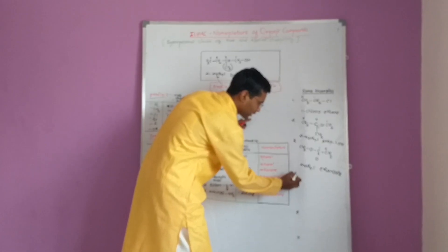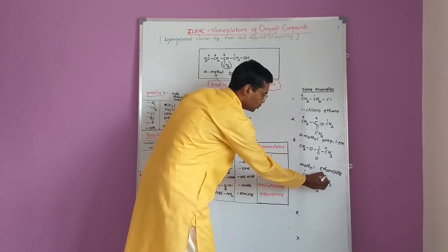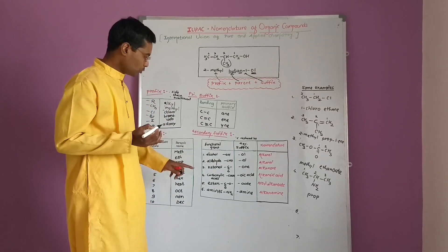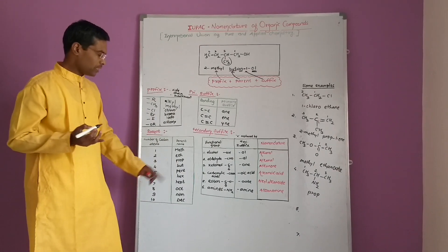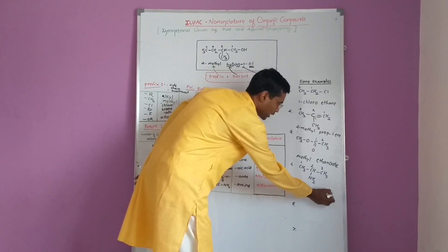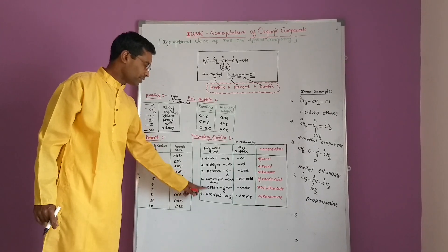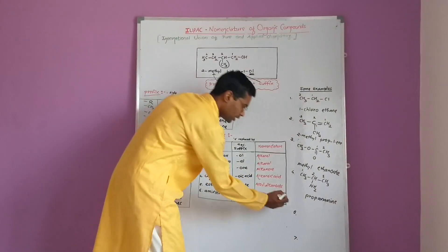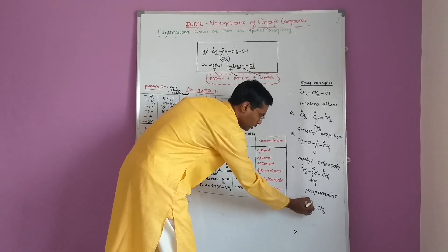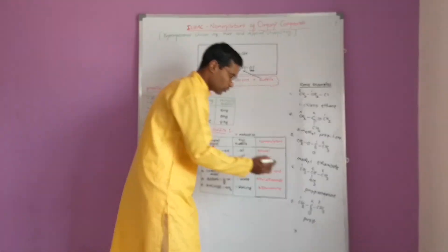Fourth example: CH3-CH(NH2)-CH3. Counting: 1, 2, 3 — three carbon atoms, so the parent is 'pro' giving propane. E is replaced by -amine, so the IUPAC name is propanamine. Fifth example — ketones: CH3-C(=O)-CH3. Numbering: 1, 2, 3 — three carbon atoms gives 'pro', and carbon-carbon single bonds give ANE. The E is replaced by -one, and the carbonyl is at position 2, giving propan-2-one.